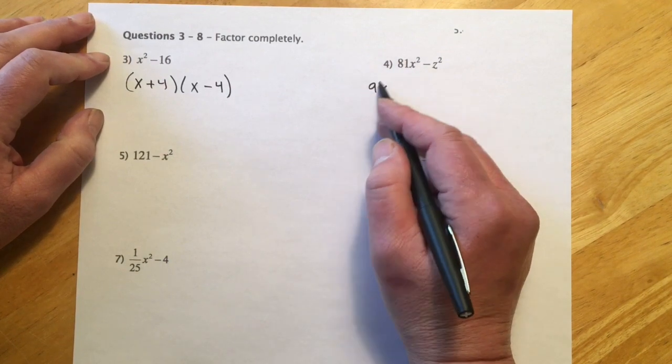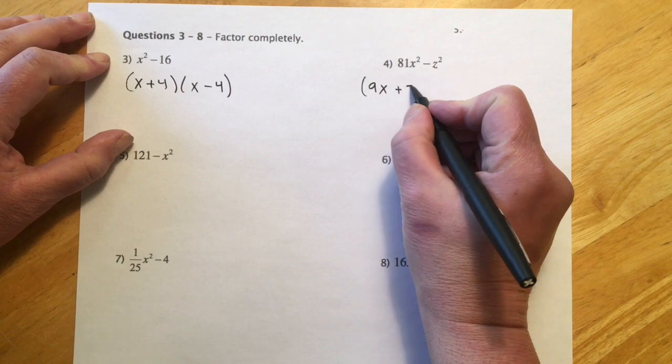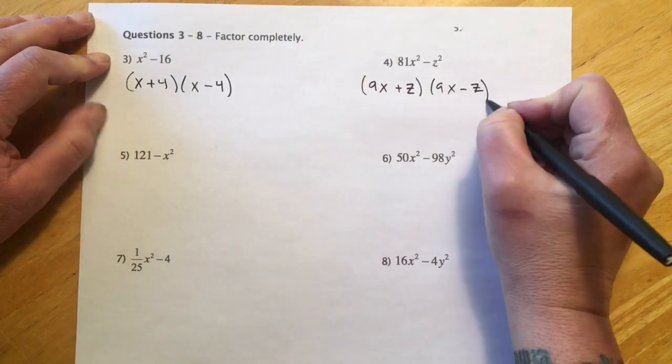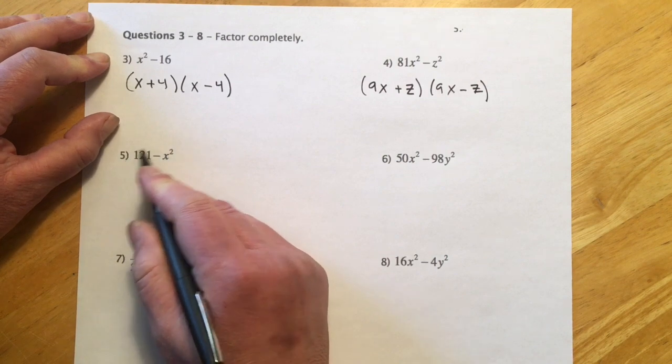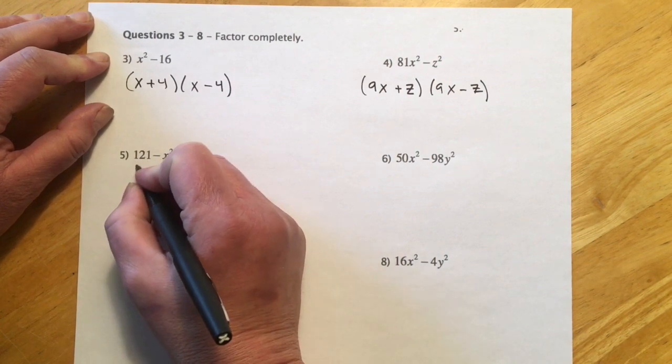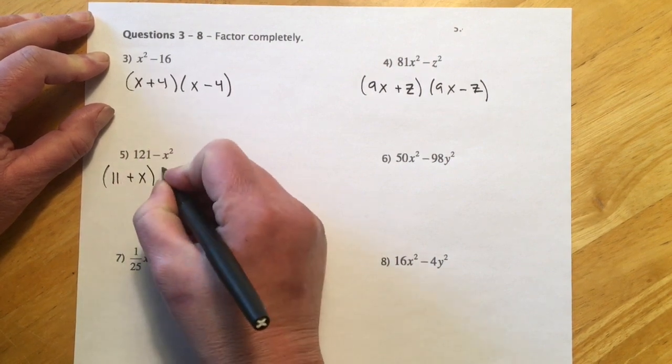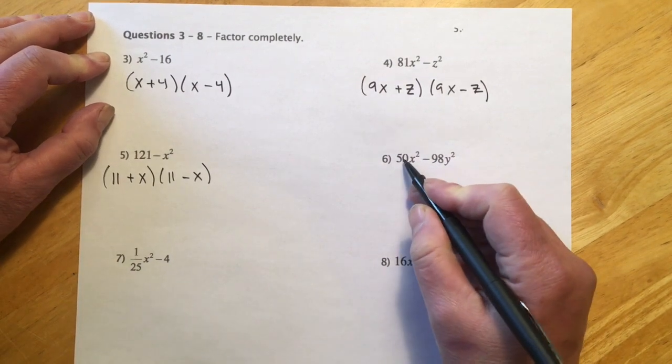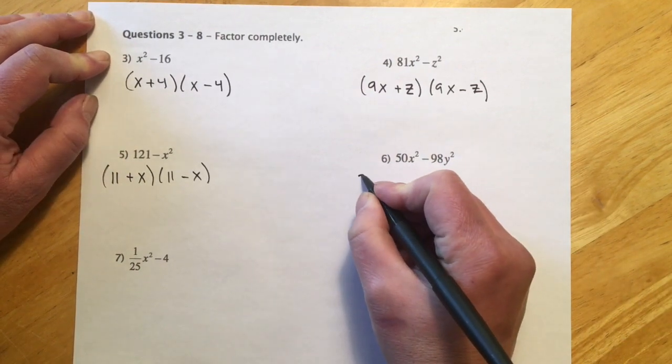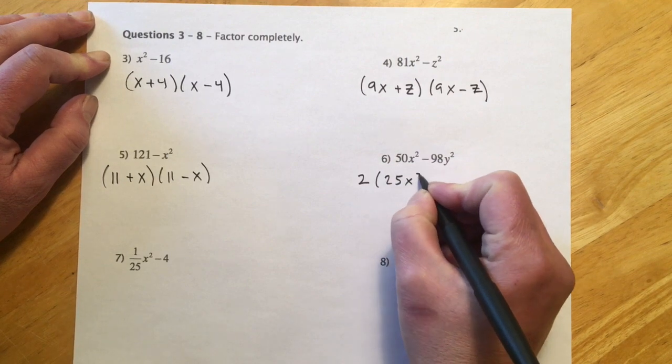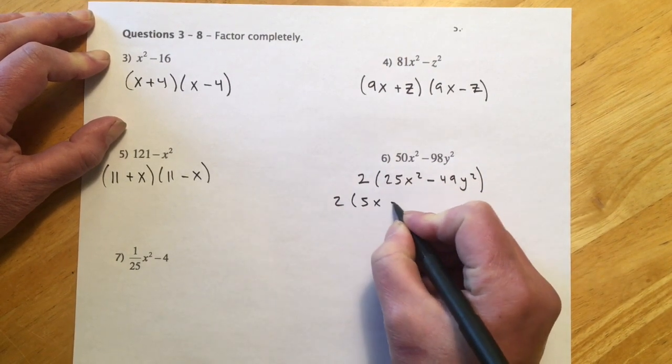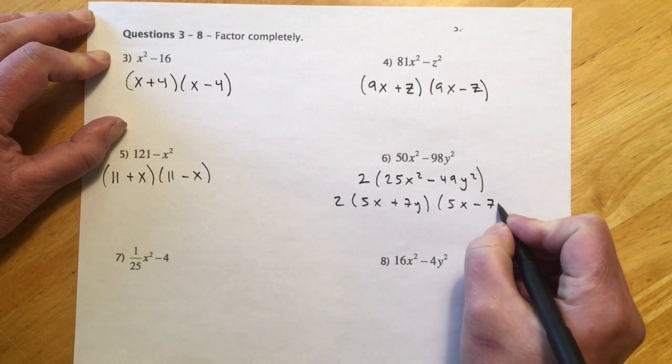For number 4, 81x² - z², 81x² will break down to 9x, and z² will be just z. So we'll have 9x + z and 9x - z. This one might feel backwards, but you don't want to change it because it's the x that has to have the plus minus, not the 121. So 121 is 11 squared, so 11 + x and 11 - x. Here, 50 and 98 are not perfect squares, but the x and y are, so there's probably a GCF. I can get a 2 out, giving me 25x² - 49y². This will be 2(5x + 7y)(5x - 7y).